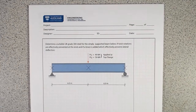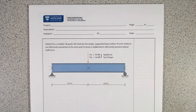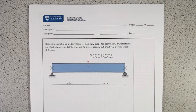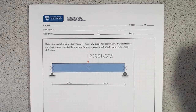In this video we're going to run through an example on determining the bending capacity of a steel member subjected to a particular load, based upon the provisions in NZS3404, which is the steel standard in New Zealand. We're going to use what we've learned in the last few lectures around how we determine section capacity and member capacity, and put it together in a design example.